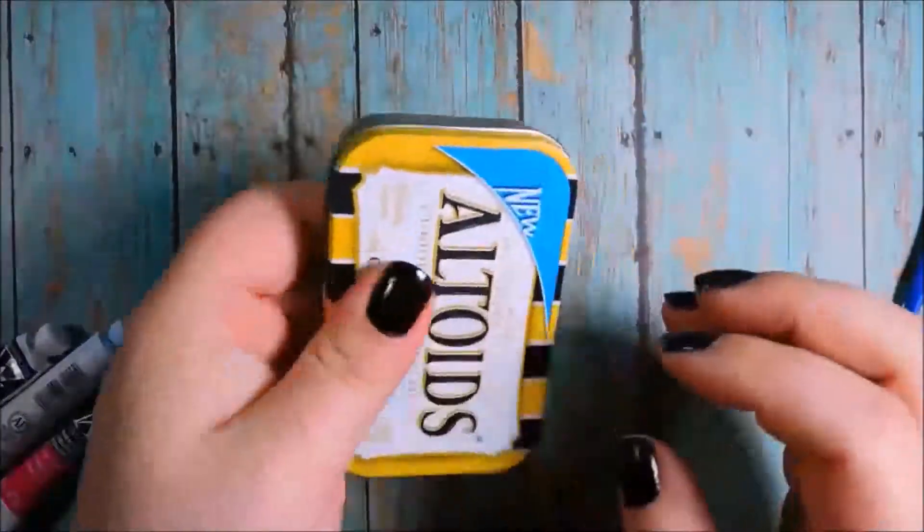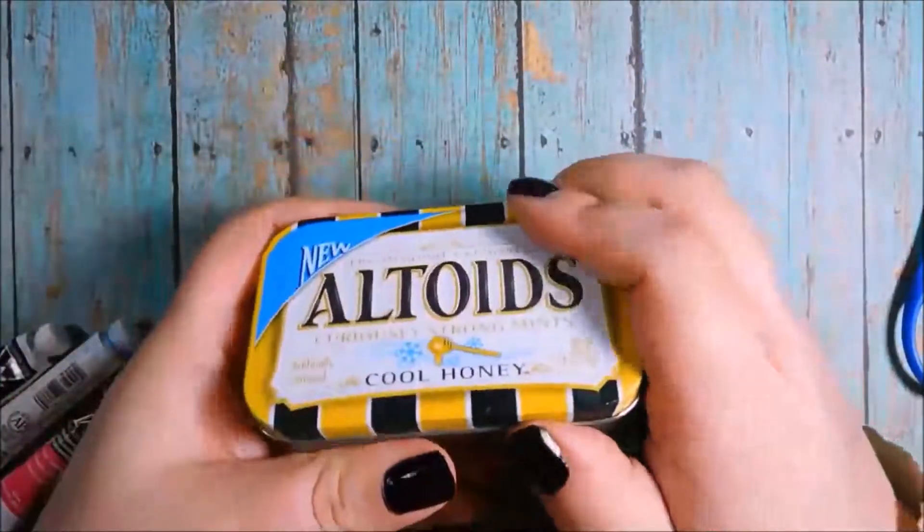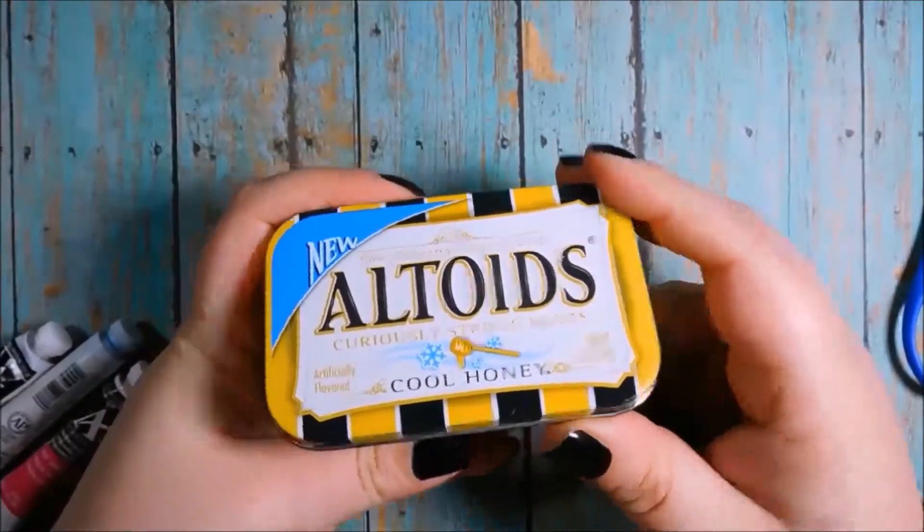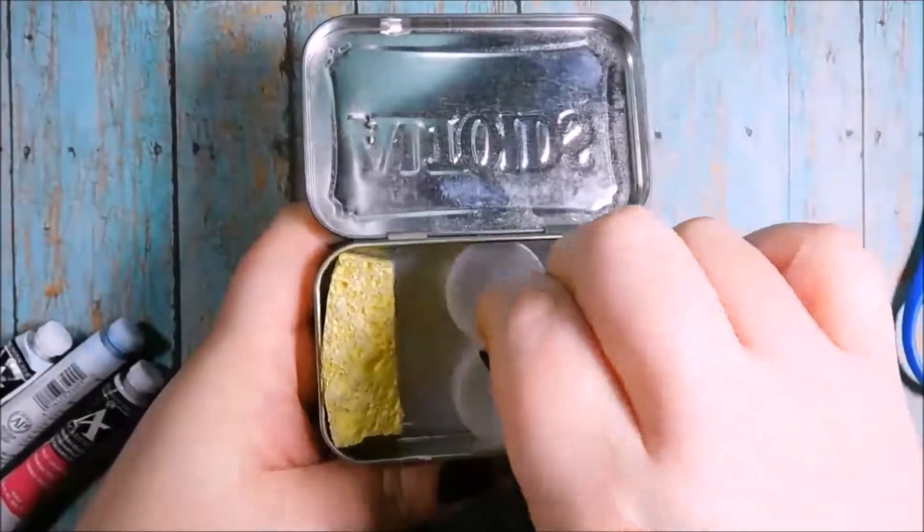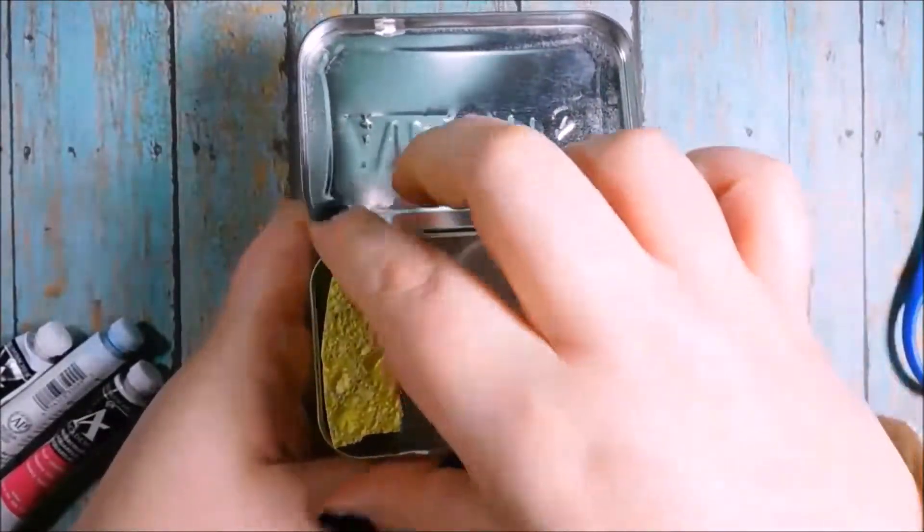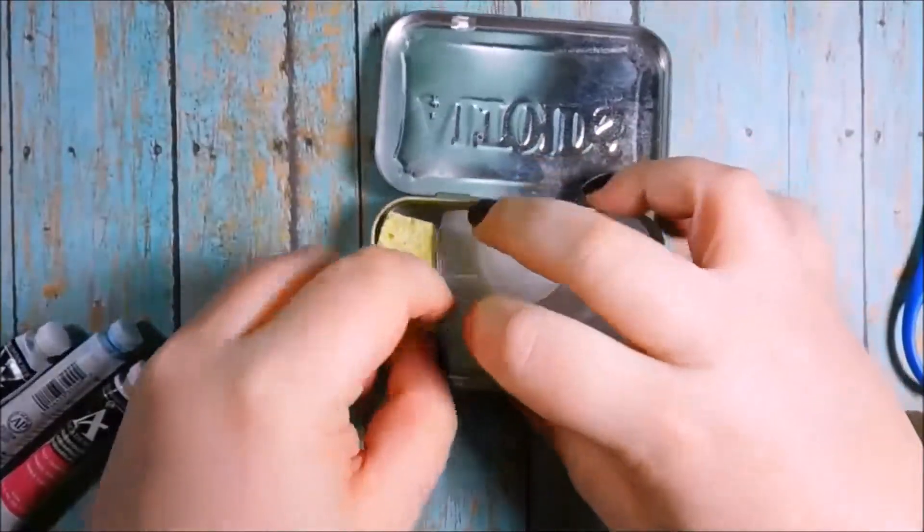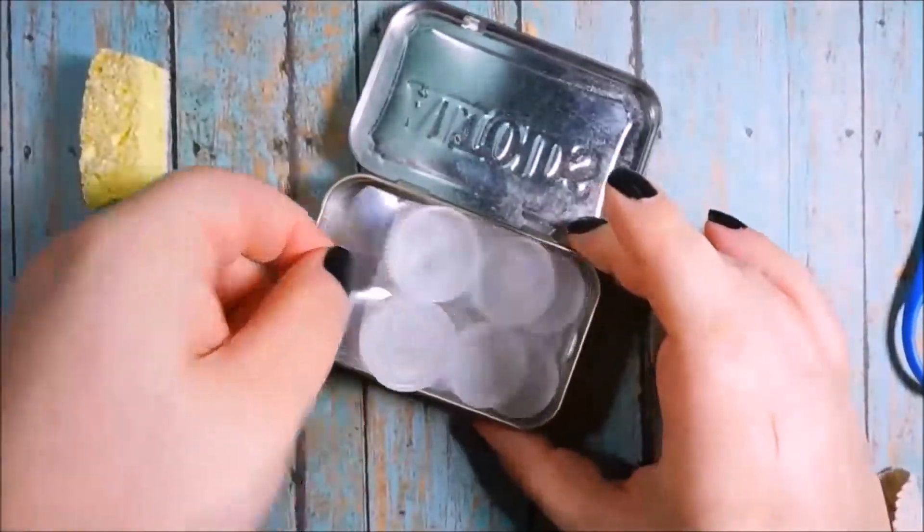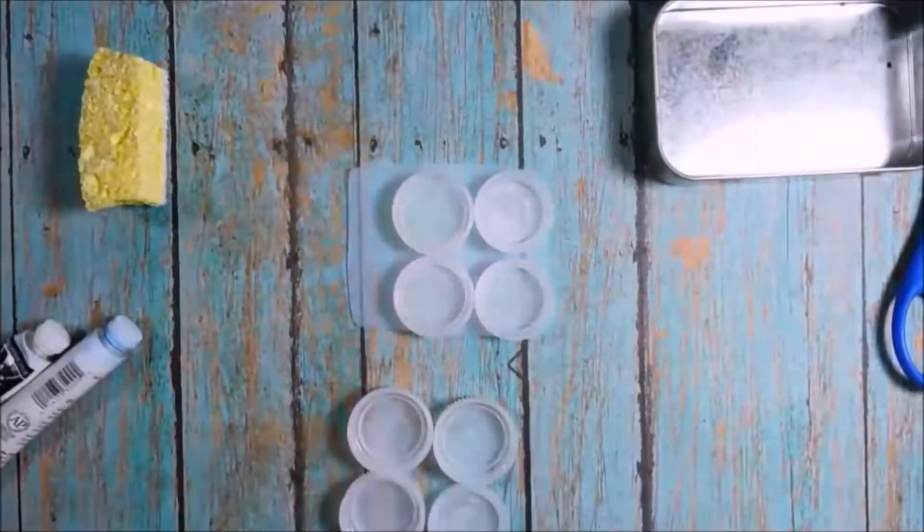And you can see it fits very nicely in there, very little rattle. Oh so nice. You can also decorate your tin any way you want. You can just sand the box down, paint it, glue things to it, personalize it. I love this idea because it's so small and it's something that you would probably already have in your bag or your purse.